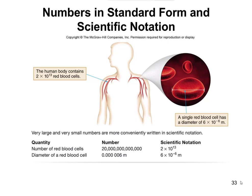That's 20,000,000,000,000 — like, that would get old fast trying to write that over and over again. So instead, 2 times 10 to the 13th is a much faster way of writing the number of blood cells.